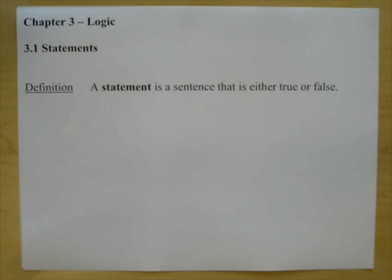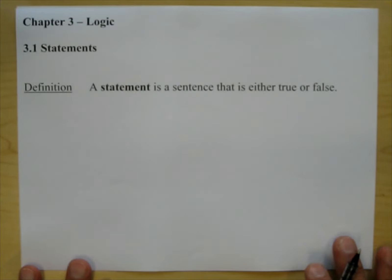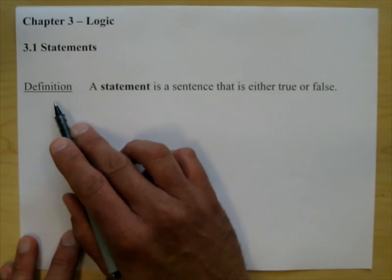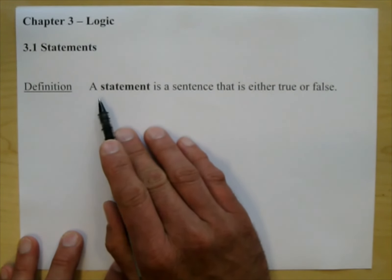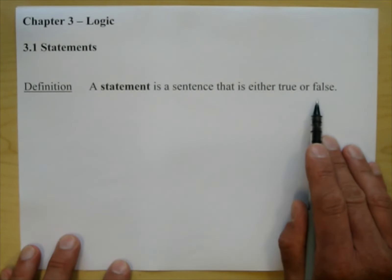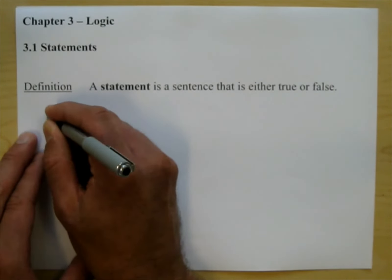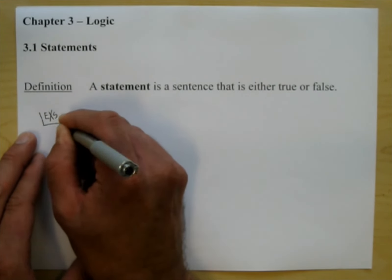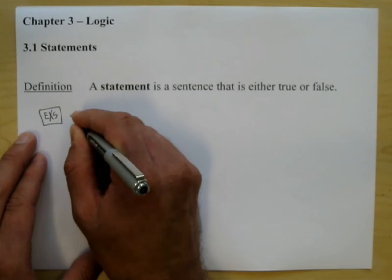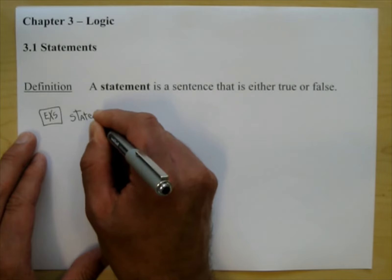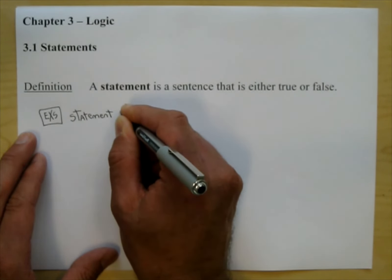Logic is a method of reasoning. You may have heard this said in another class: all men are mortal; Socrates was a man; therefore Socrates was mortal. We can draw a Venn diagram or an Euler diagram to see this reasoning. This is called deductive reasoning. Before we get into some of that more complicated stuff, we're going to start with the definition of a statement.